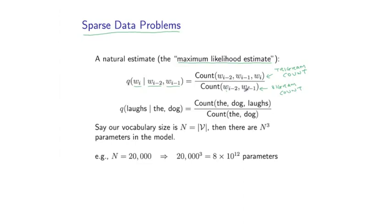So let's take a specific parameter as an example. Say I want to estimate the parameter corresponding to the probability of laughs, given that the previous two words are the and dog. I just have the ratio of these two counts, the trigram count and the bigram count.